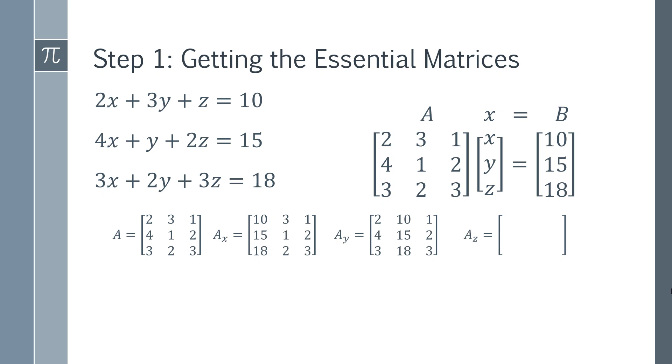Then for Az I'm looking at the third column, which is like my z column the way that I think about it, and I'm going to replace that with B. Then I'm just going to fill in everything else that was in matrix A. So we have all of the important matrices that we need to use Cramer's rule to solve this.